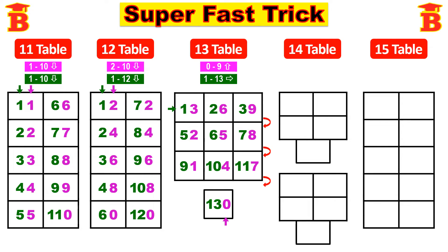Now this is the 13th table. See the green color arrow mark and take it in that order. Therefore the 13th table is: 13, 26, 39, 52, 65, 78, 91, 104, 117, and finally 130.